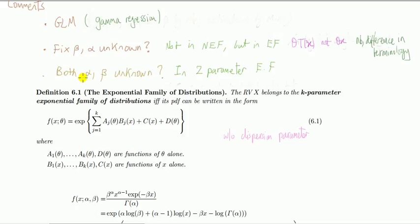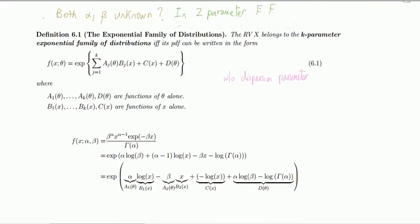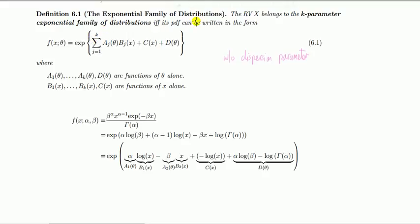How about the case where both parameters are unknown? Then we can show this is not a one-parameter exponential family — it belongs to the two-parameter exponential family. Since the method is essentially the same I've just given the answer. This is the definition of the exponential family in general for k number of parameters. The only difference is up here — this is the more general version. We're not talking about natural exponential families here. It's a linear combination of a function of each parameter times a function of the data.